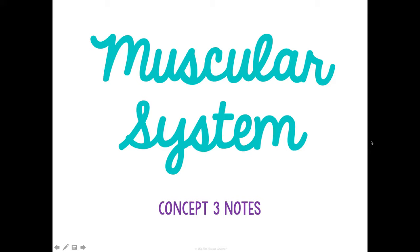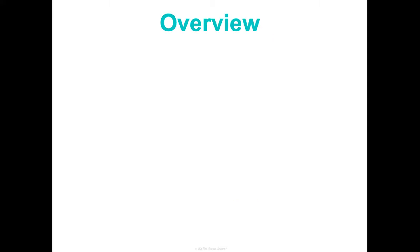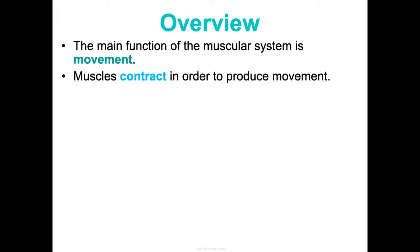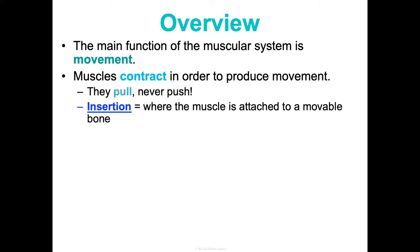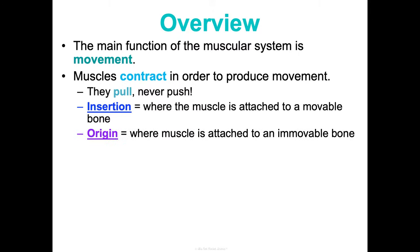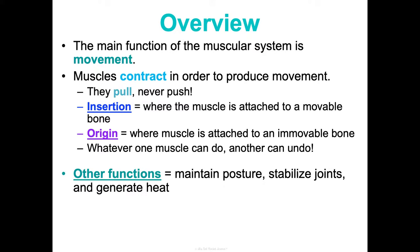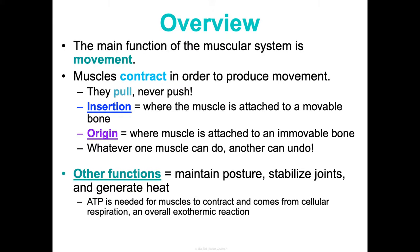Concept three notes: the muscular system. We've already talked about the skeletal system and your joints, now we're getting into your muscular system whose main function is movement. Muscles contract in order to produce movement and they always pull, they never push. The insertion is where the muscle is attached to a movable bone and the origin is where the muscle is attached to an immovable bone. Whatever one muscle can do, there's always another that can undo it or do the reverse. Other functions of the muscular system are maintaining posture, stabilizing your joints, and generating heat.